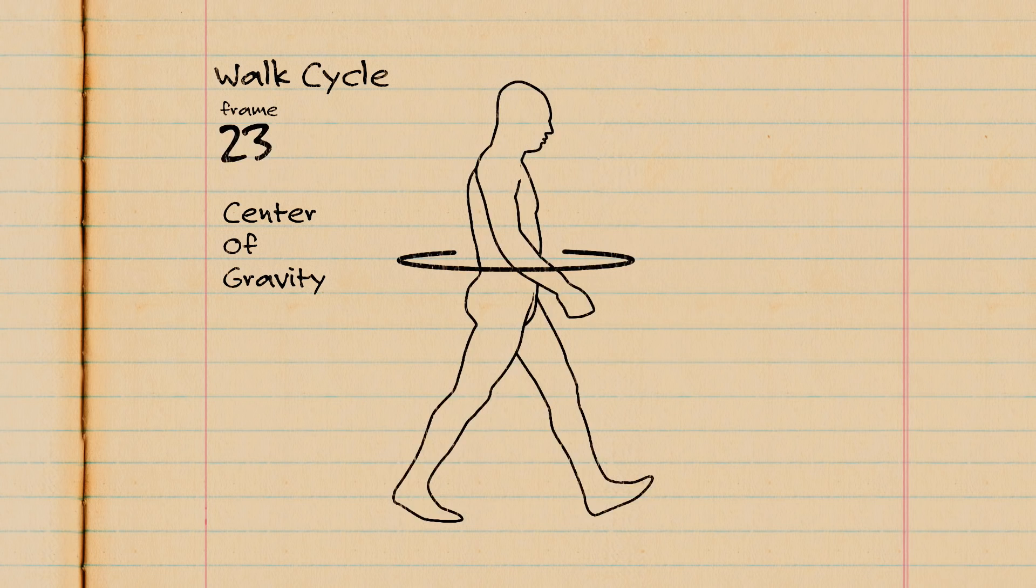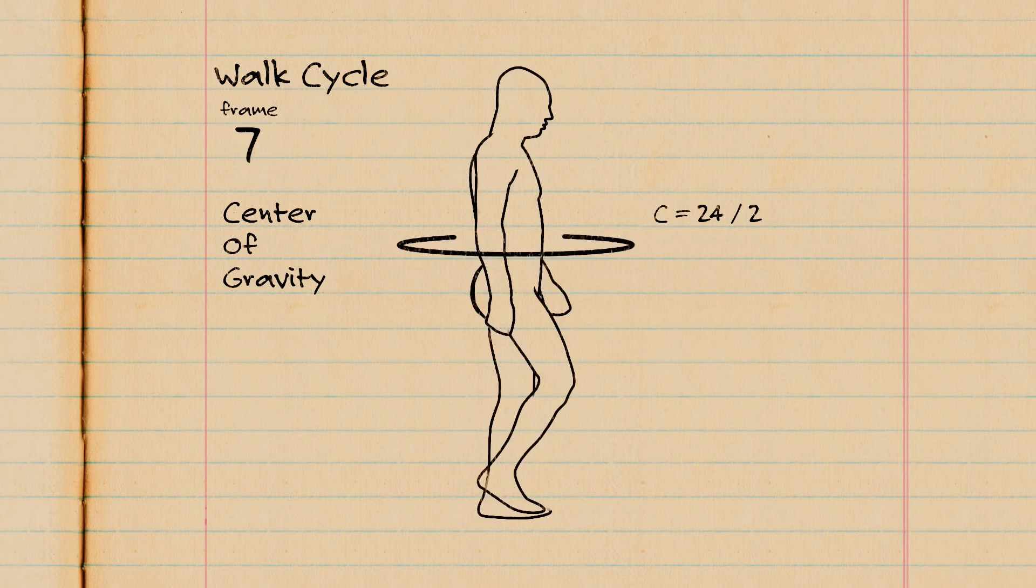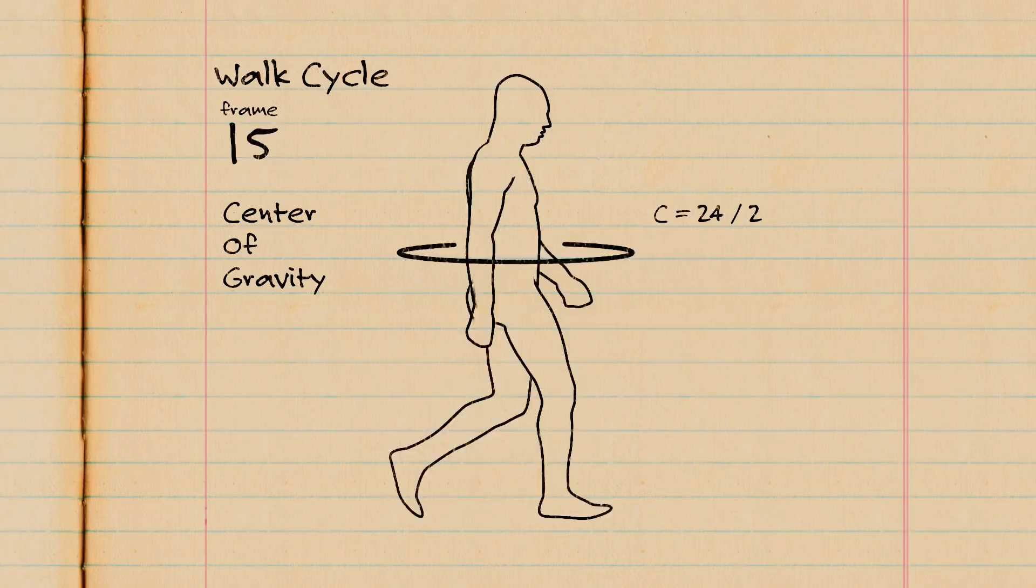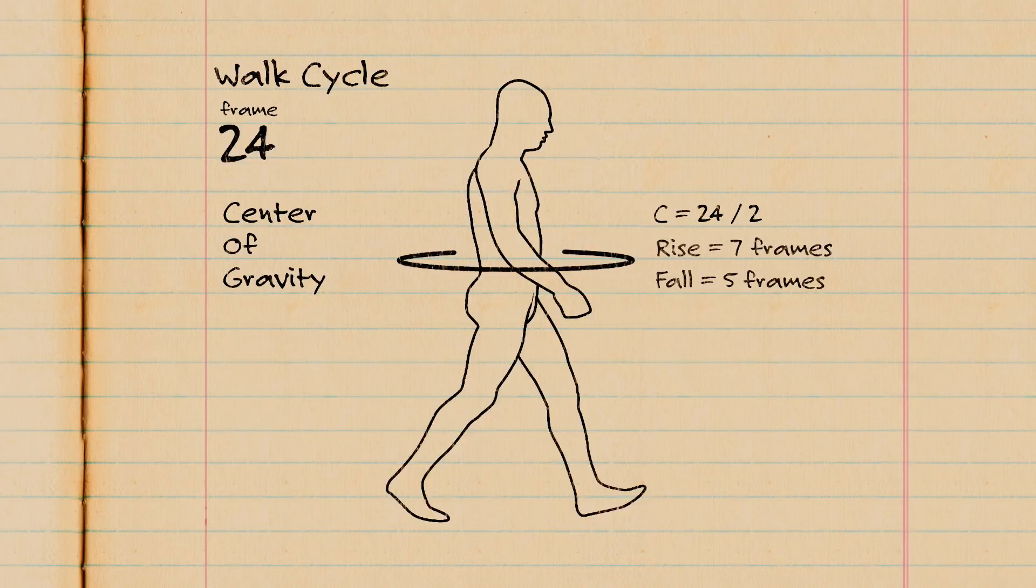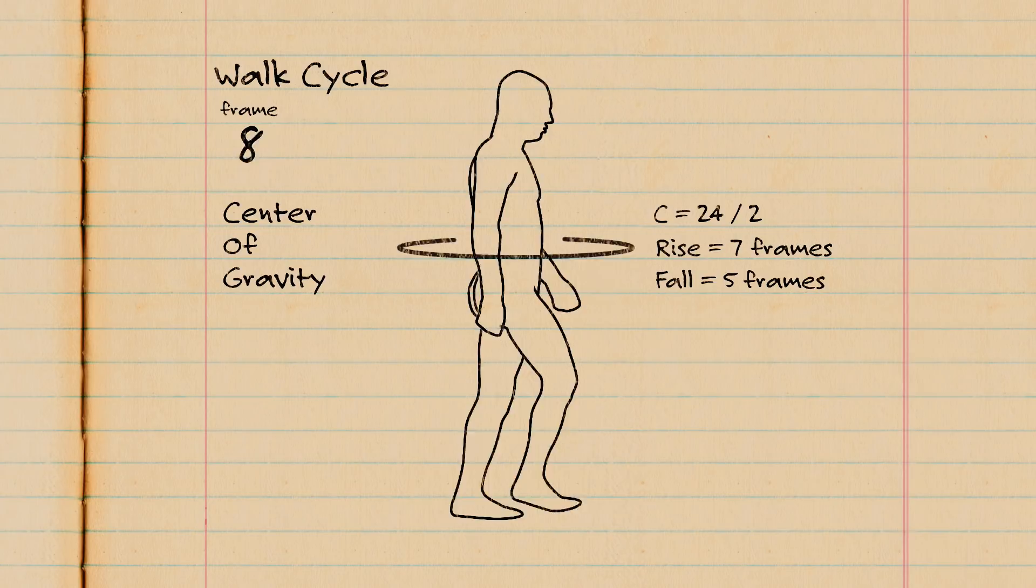Over a 24-frame walk cycle, the COG will rise and fall twice, once with each foot stride over 12 frames each. If we slow this down, you can see a rise of seven frames and a fall of five frames. This adheres to the golden ratio. Of course, we're rounding here because we don't have sub-frames.